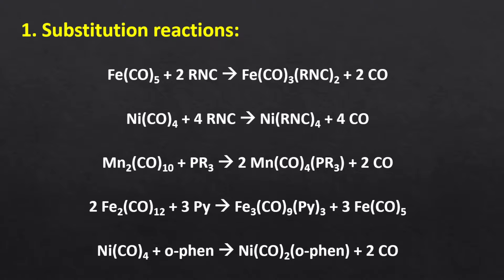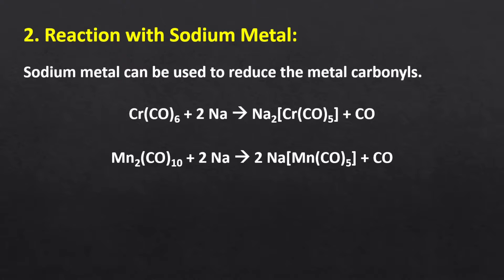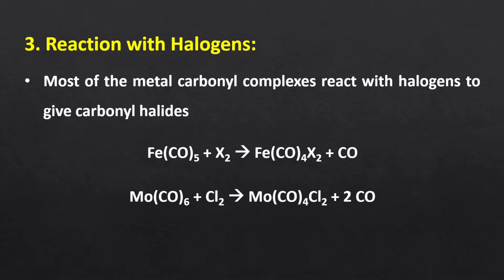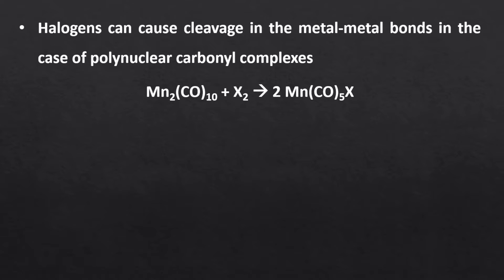Some more important reactions include reaction with sodium metal, which can be used to reduce metal carbonyls. For example, chromium and manganese atoms in their zero oxidation state are reduced to -2 and -1 oxidation states respectively. Next is the reaction with halogen: most metal carbonyl complexes react with halogen to give carbonyl halides. Iron and molybdenum carbonyl complexes undergo partial substitution with halide. Halogen can also cause cleavage of metal-metal bonds in polynuclear carbonyl complexes. A dinuclear manganese complex decomposes to give its mononuclear complex, with substitution of one carbonyl ligand by a halide.